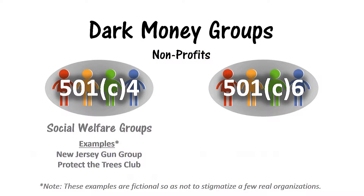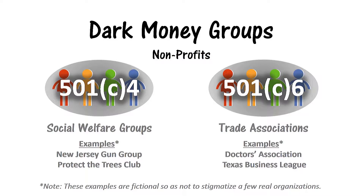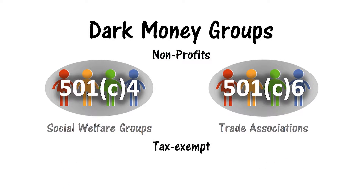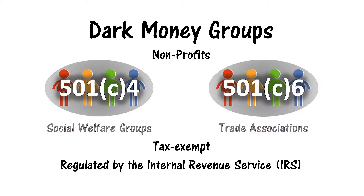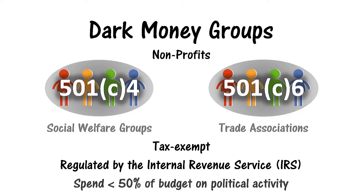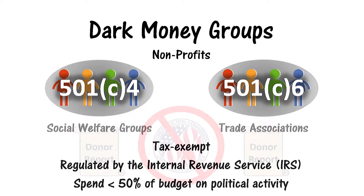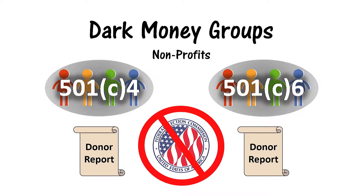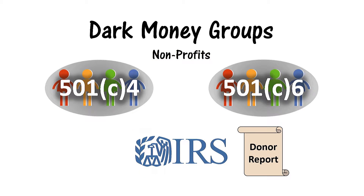501(c)(4) nonprofits are social welfare groups, and 501(c)(6) nonprofits are trade associations. These nonprofit groups are tax-exempt and regulated by the Internal Revenue Service. They can maintain their tax-exempt status as long as political activity isn't their primary function — meaning they spend less than 50% of their budget on political activity. 501(c) groups do not disclose their donors to the FEC; instead, they report to the IRS, and those reports remain private.